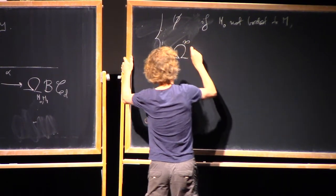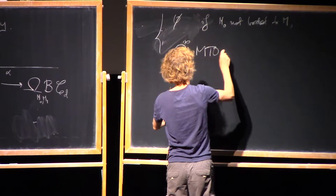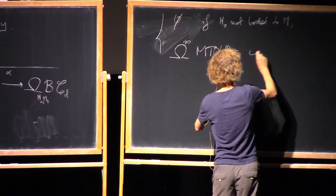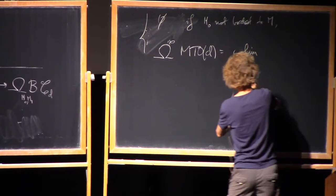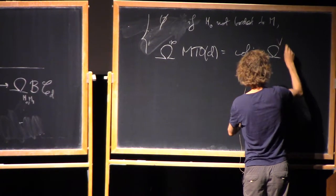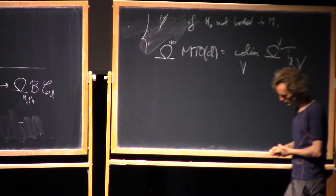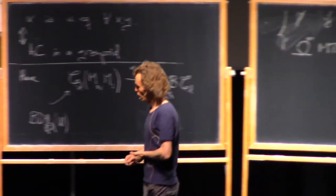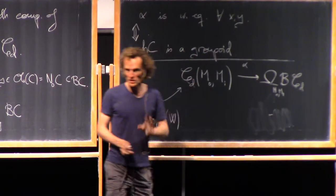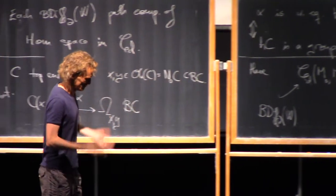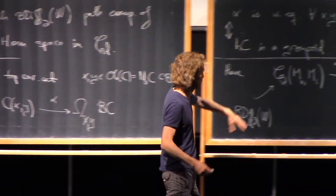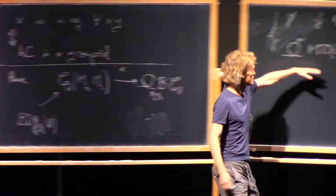So that's called omega infinity mtod, which is the co-limit omega v, td b.